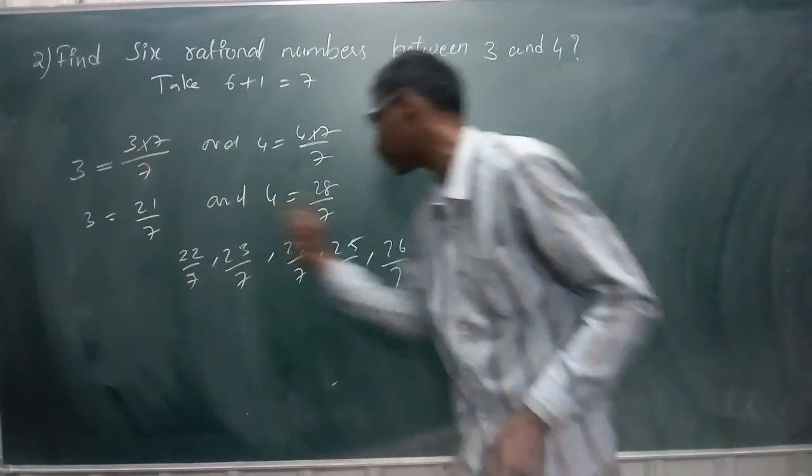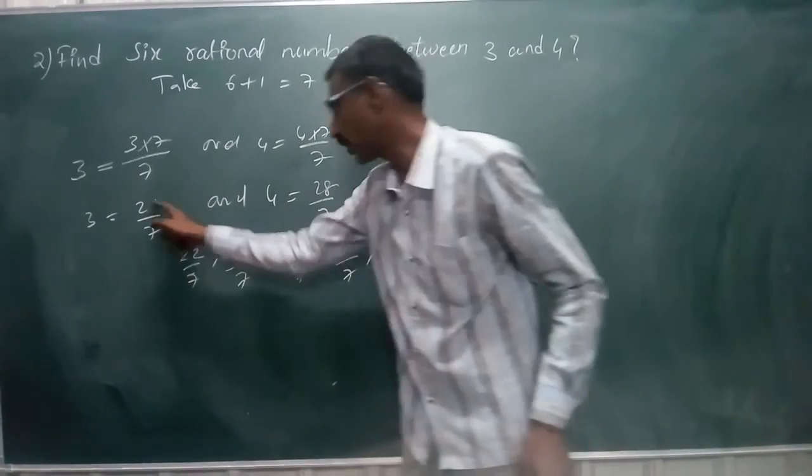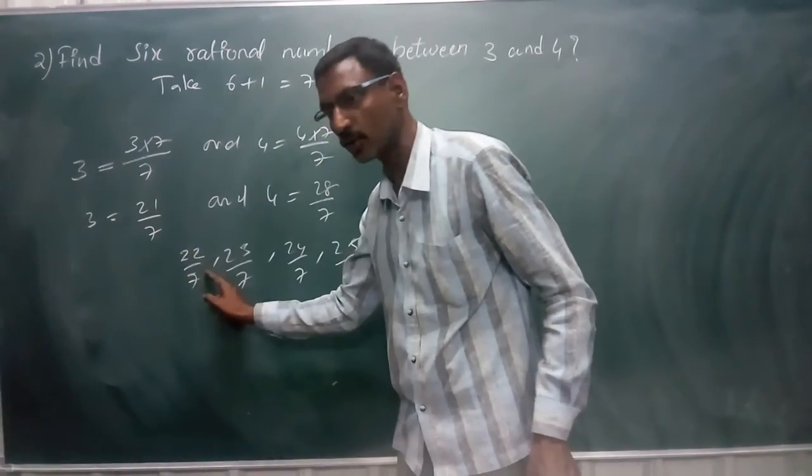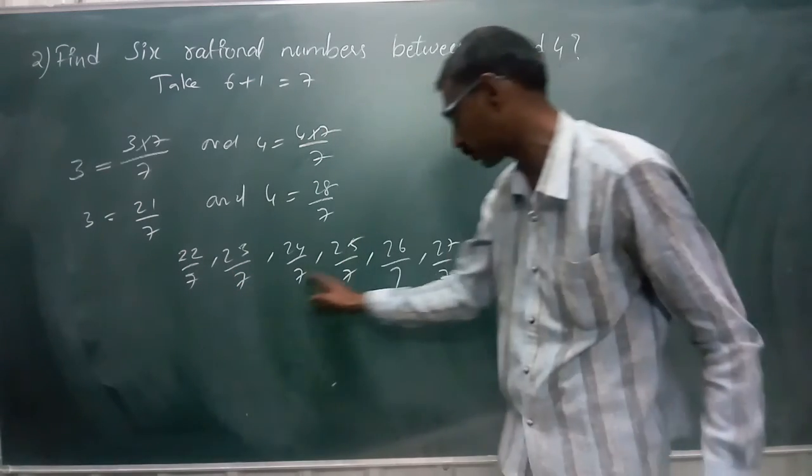All the rational numbers between these two. 21 by 7, after that you have 22 by 7, 23 by 7, and so on.